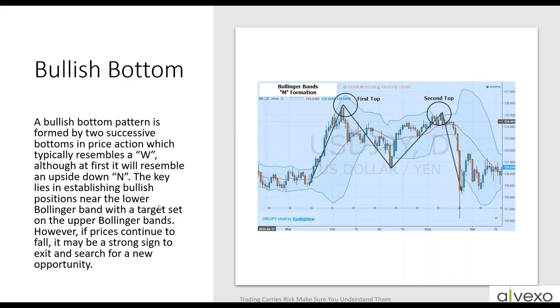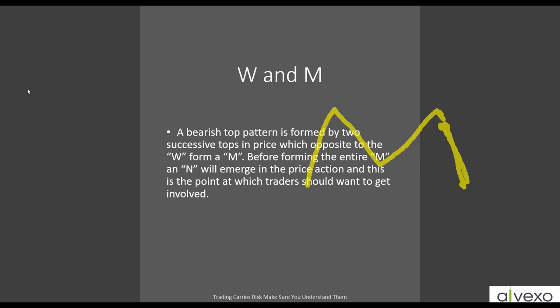The exact reverse is true for the M pattern, which comes off an uptrend. We see the formation of the M — instead of double bottoms, it's forming double tops. We might not notice it right away, but once it forms the N shape and we see it cross that moving average, we know the uptrend is fully over and we can trade in the opposite direction. So we have either a right-side-up or upside-down formation depending on whether we have an M or a W.